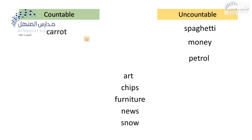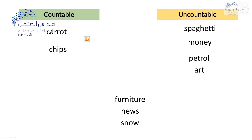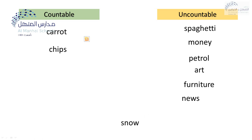What about art? Uncountable noun. Look at the next word — chips. We can count the chips because it ends with s, so it concerns countable nouns. Furniture? Uncountable. What about news? It's uncountable noun, a regular noun. What about snow? Snow is uncountable noun.